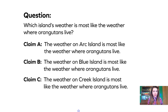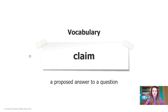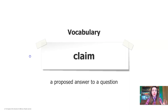The Wildlife Protection Organization has sent us three claims and they want us to argue which claim is the best. Let's read them together. Claim A: the weather on Arc Island is most like the weather where orangutans live. Claim B: the weather on Blue Island is most like the weather where orangutans live. And Claim C: the weather on Creek Island is most like the weather where orangutans live. Let's add the word "claim" to our vocabulary — a claim is a proposed answer to a question.